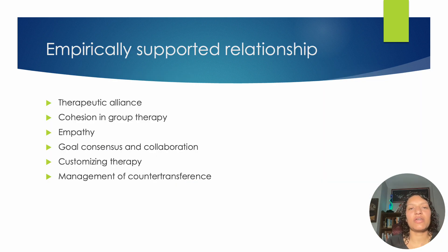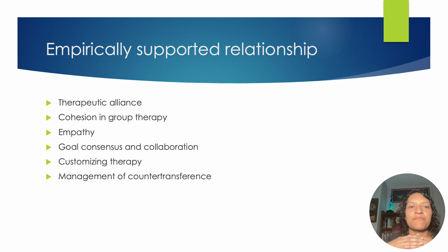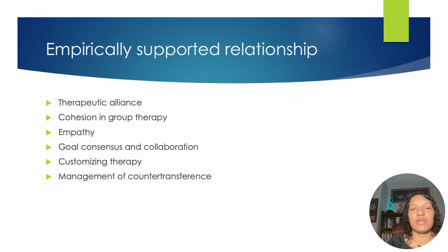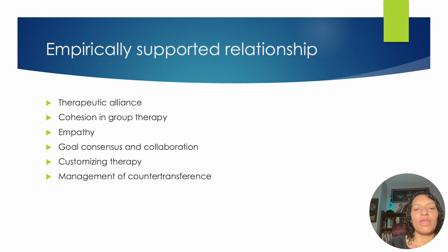Empirically supportive relationships: we've talked quite a bit about how the relationship with our client is the biggest and most important skill we as counselors can have. Research has strongly shown that the therapeutic relationship impacts therapy outcomes — does this person improve, do they get better, do they achieve their goals? Important elements include empathy, taking a collaborative approach, and managing transference and countertransference.